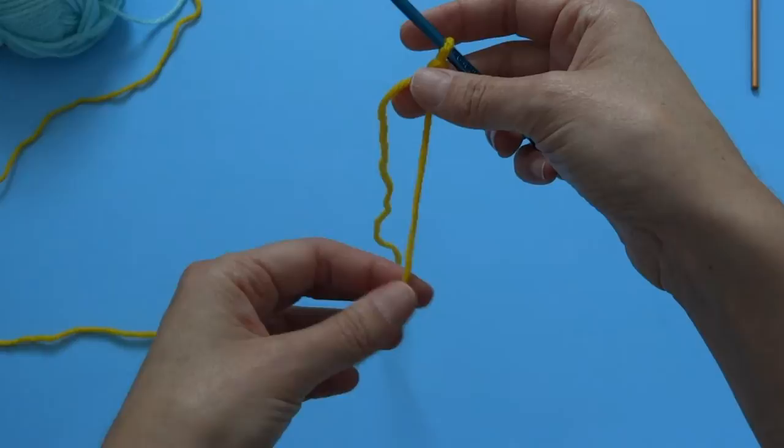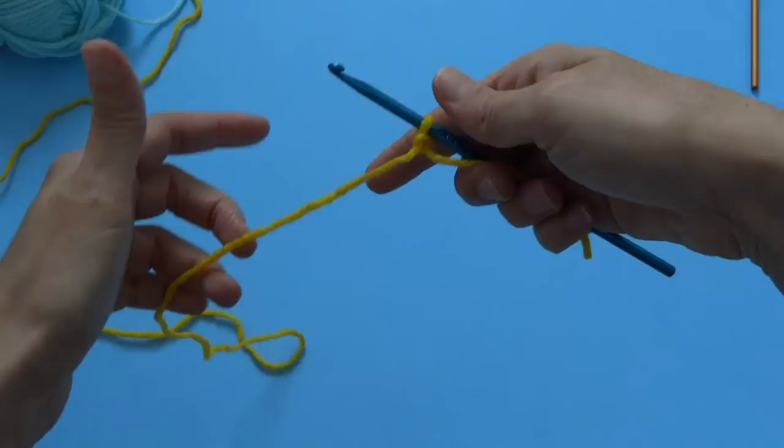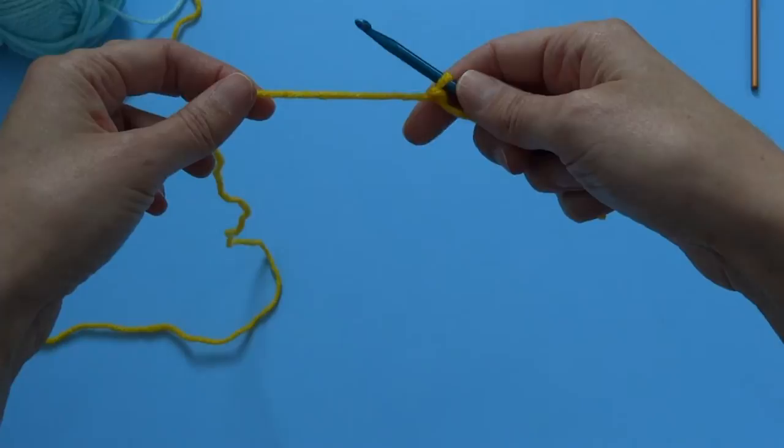And remember, you're always going to work using your long string, so if you've made it with a really long end, you might want to snip it or just try to tuck it up against the crochet hook you're using, just so you don't confuse the two.